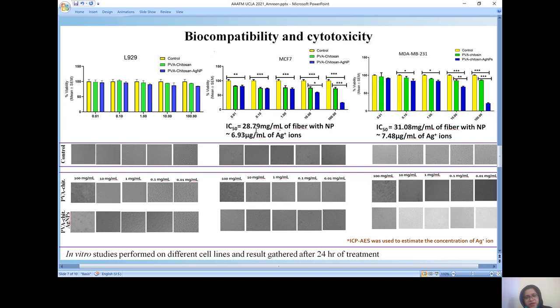Then IC50 value was calculated with the MCF-7 MDA-MB breast cancer cell line, showing that approximately 6.93 and 7.48 micrograms per ml of the silver ions were found to be more effective as an anti-cancerous agent.